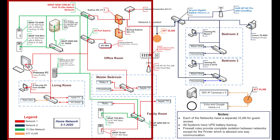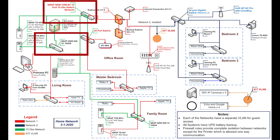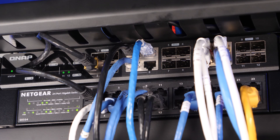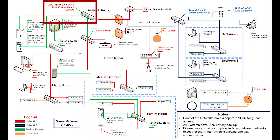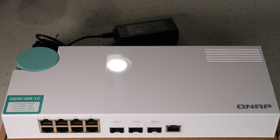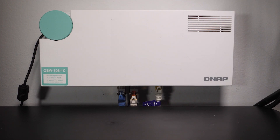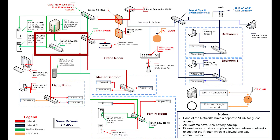Lastly there is the 10 gigabit section, which is attached to my primary network — that's indicated in the green lines. In my office are two 10 gigabit switches. The primary switch is the QNAP QSW-1208C, which is a 12-port switch comprising eight combo ports and four dedicated SFP+ ports. That's at the epicenter of my network. Tied to that, on the other side of the room, is a QNAP QSW-308C, which I use to provide a 10 gigabit feed and attach my main computer and test computer to the 10 gig network.